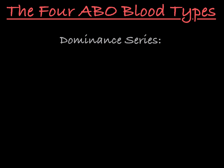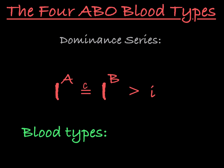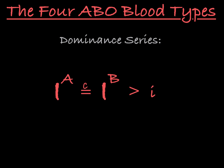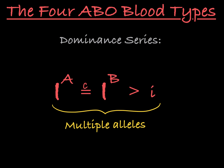So if we create a series of dominance here, we see that IA and IB are co-dominant and they are both dominant to little i. These three alleles lead to four possible blood type phenotypes: A, B, AB, and O. In this way, the ABO gene gives you a solid example of both multiple alleles and co-dominance.